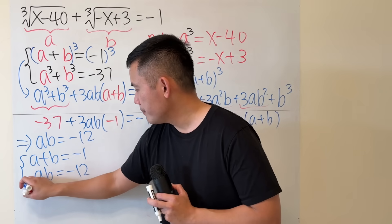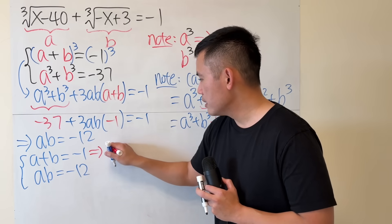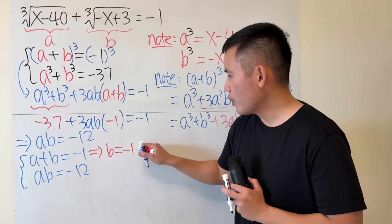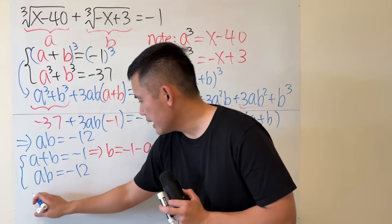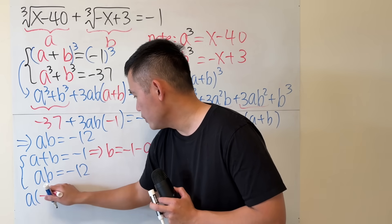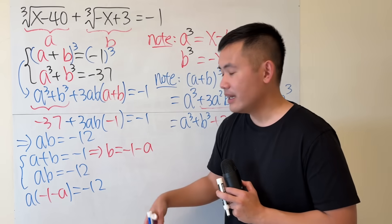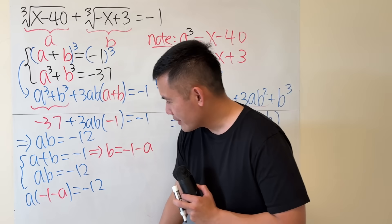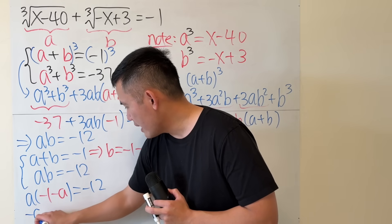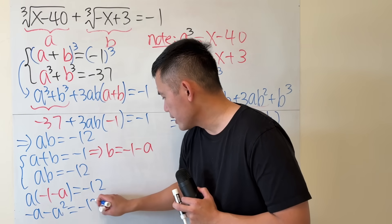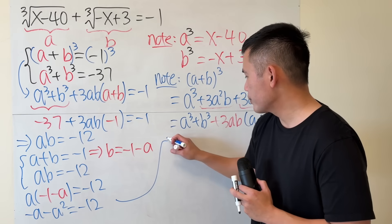So putting things together, a plus b is negative 1, while ab is negative 12. From here, we can solve for b, which is negative 1 minus a, and then put that in there. So we get a times negative 1 minus a is equal to negative 12. And we will have a quadratic equation. So this right here will give us negative a minus a squared is equal to negative 12. And then really just solve it real quick.